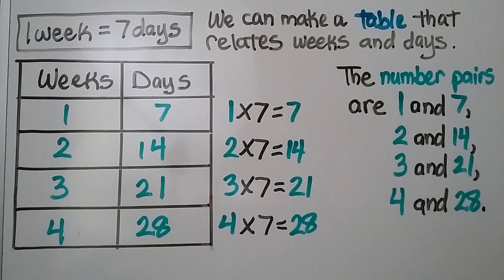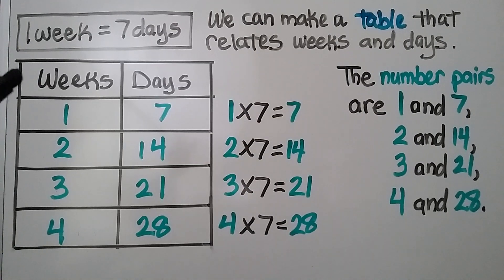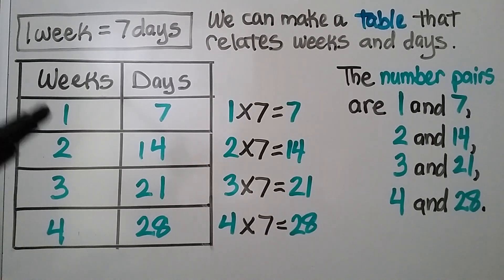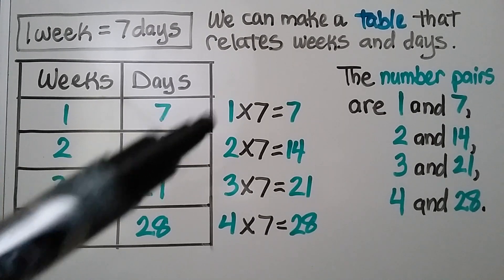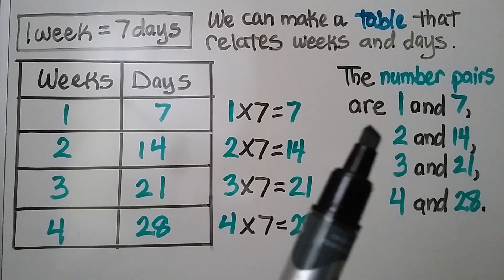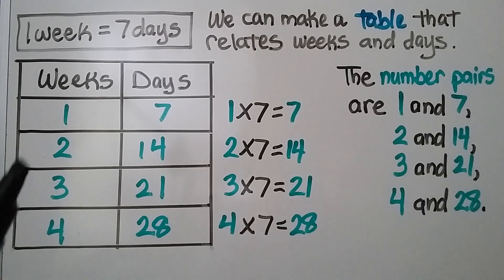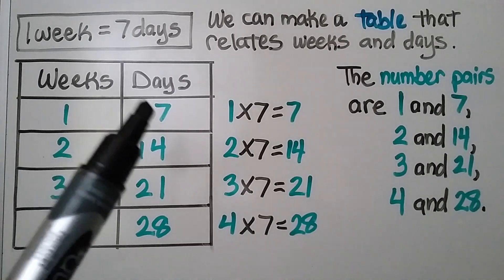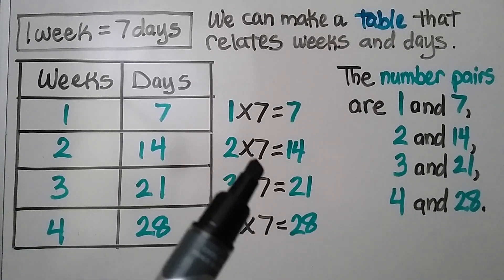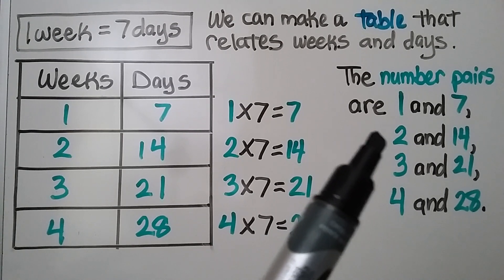We can make a table that relates weeks and days. One week is equal to seven days, so the labels for our columns are weeks and days. One week is seven days — that's one times seven — so our number pairs are one and seven. Two weeks would be 14 days, which is two times seven, so our number pairs are two and 14.